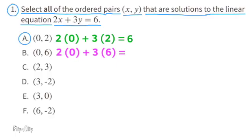Let's do the same thing for B: substitute 0 for x and 6 for y. 2 times 0 equals 0, plus 3 times 6 — 3 times 6 is 18. 0 plus 18 equals 18. Since the linear equation equals 6 and the ordered pairs for B equal 18, the ordered pairs for B are not a solution.